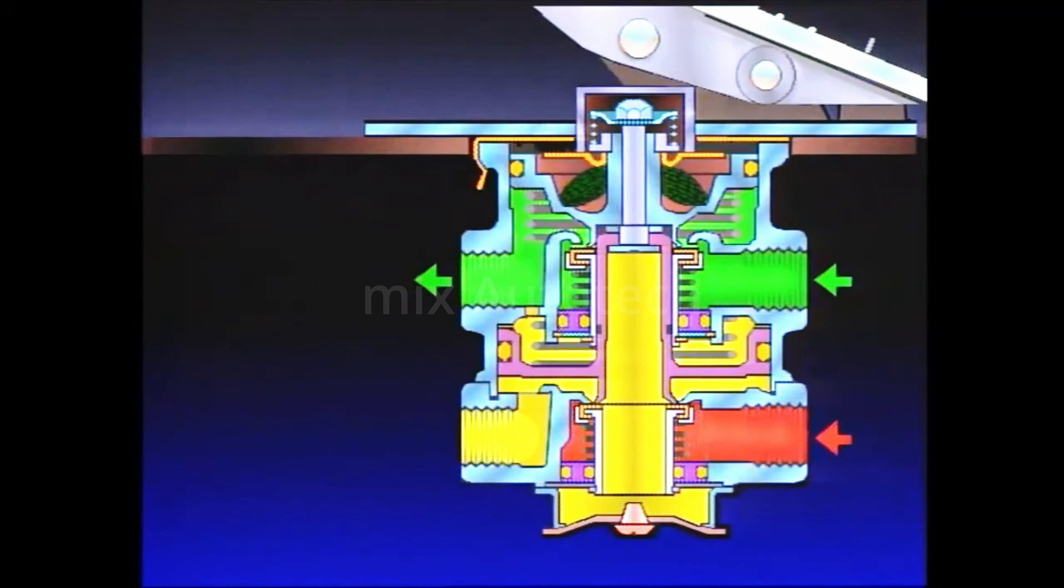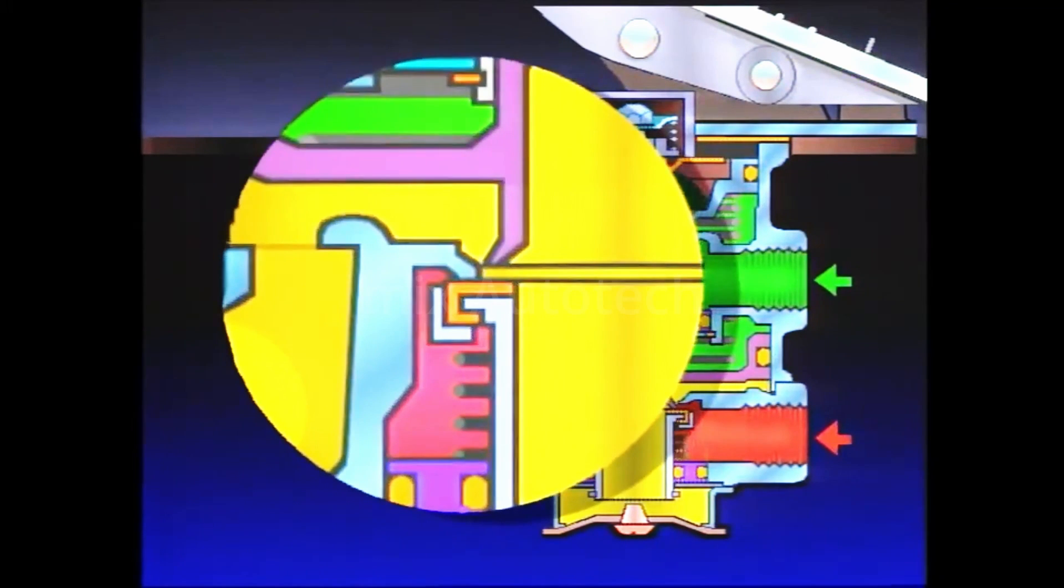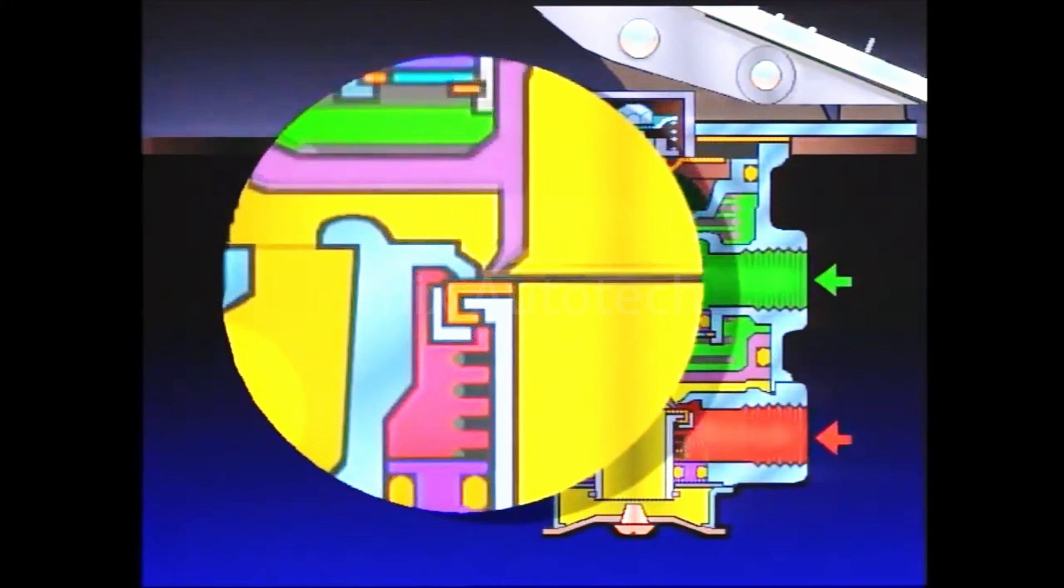Air from the primary delivery passes through the bleed passage and enters the relay piston cavity. Primary delivery air pressure moves the relay piston, which incorporates the exhaust seat, and closes the secondary exhaust valve.